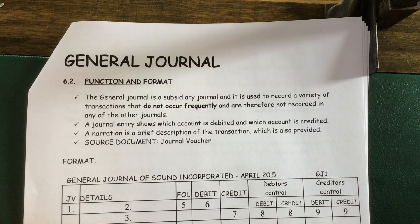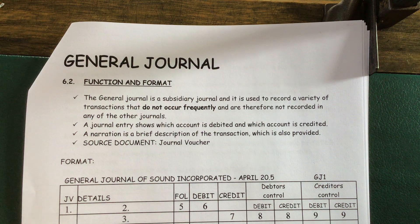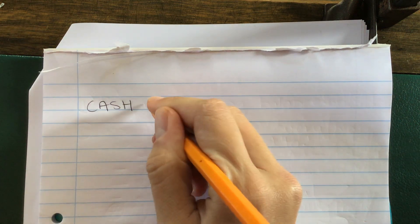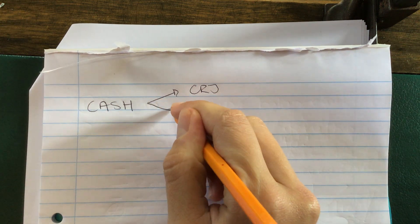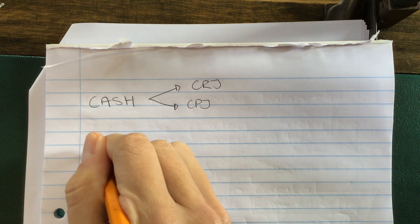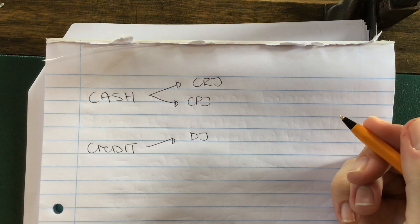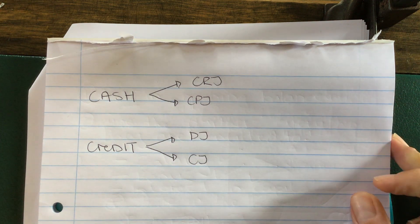The general journal is a new journal and the word journal is actually perfect for it because you can put a variety of different transactions into it. What we know about journals is that there are certain journals for certain things. We have cash journals — the CRJ for receiving cash and the CPJ for paying cash. Then we have journals for credit: credit sales go in the DJ and credit purchases go into the CJ.